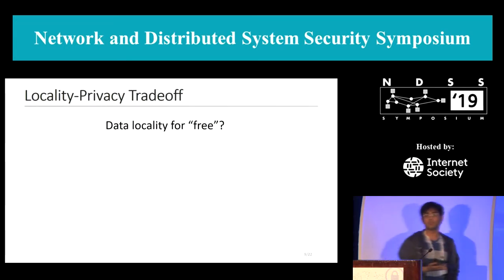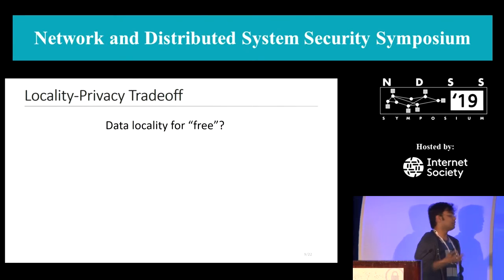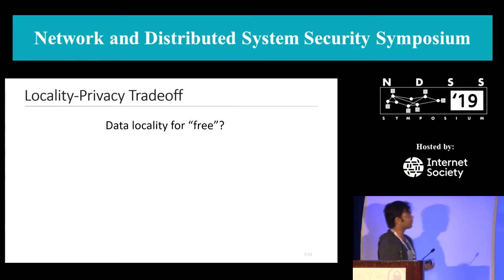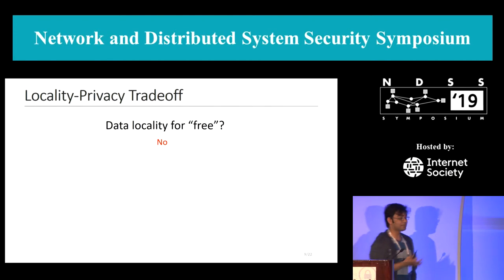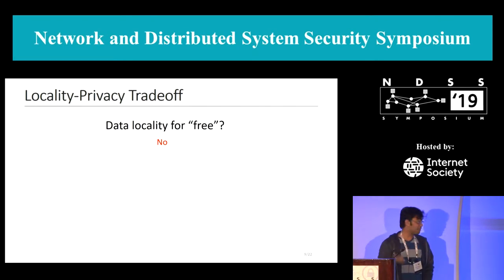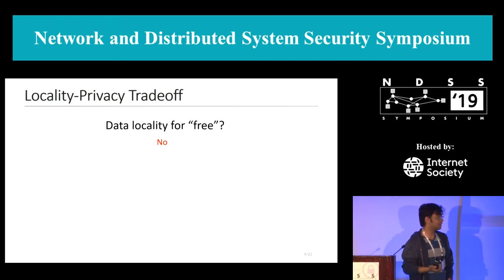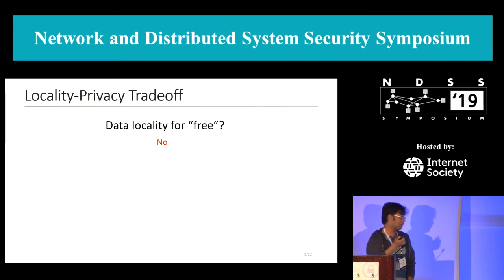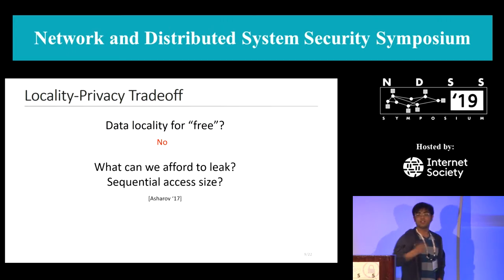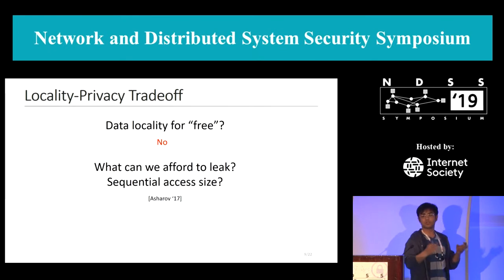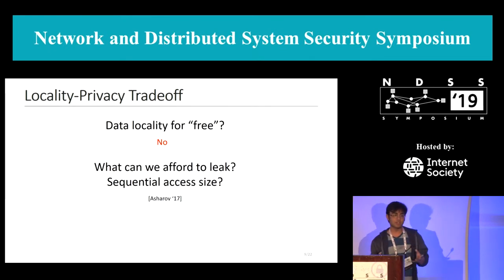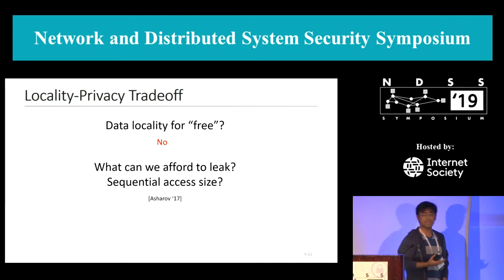We want ORAM protocols with some data locality, but we need to answer some important questions first. Can we have data locality for free without giving up security? The answer is no — there are no free lunches. If you have data locality in your ORAM, you can distinguish sequential from random accesses, which is exactly what ORAM prevents by definition. So, is there something we can afford to leak to come up with better locality-optimized constructions? A suggestion from my previous work is that you can afford to leak the sequential access extent — how much sequential data was read as part of a query, but not exactly what data was read.